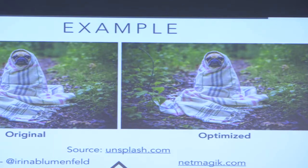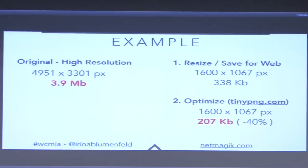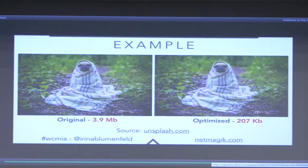Here's an example of an image I downloaded from unsplash.com. The original is on the left and the optimized one is on the right — it's hard to tell the difference in quality. The original was 5,000 pixels wide and about 4 megabytes in size. I resized it in Photoshop to 1,600 pixels wide and saved for web as a JPEG, and it became 338 kilobytes. Then I used TinyPNG to further optimize it, and it lost 40% more of its size, becoming 207 kilobytes. So the difference is 4 megabytes down to 200 kilobytes.